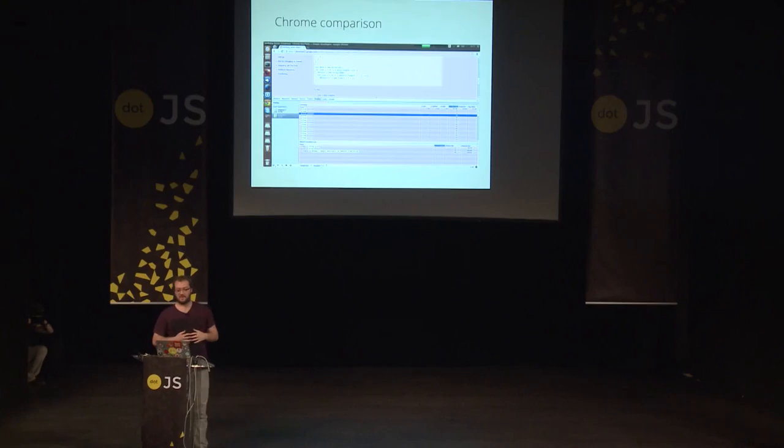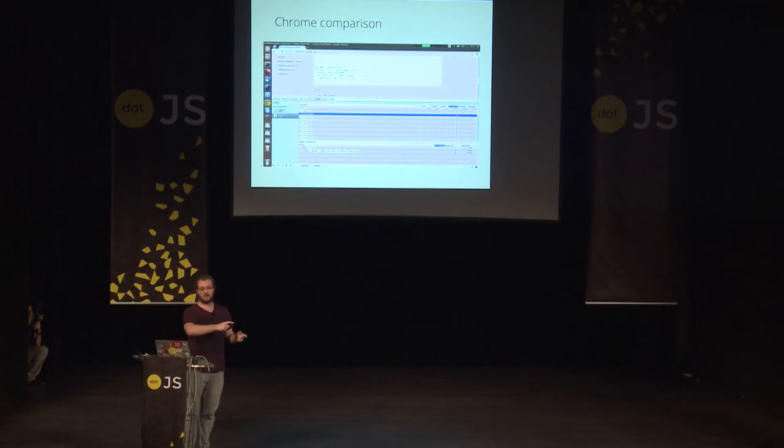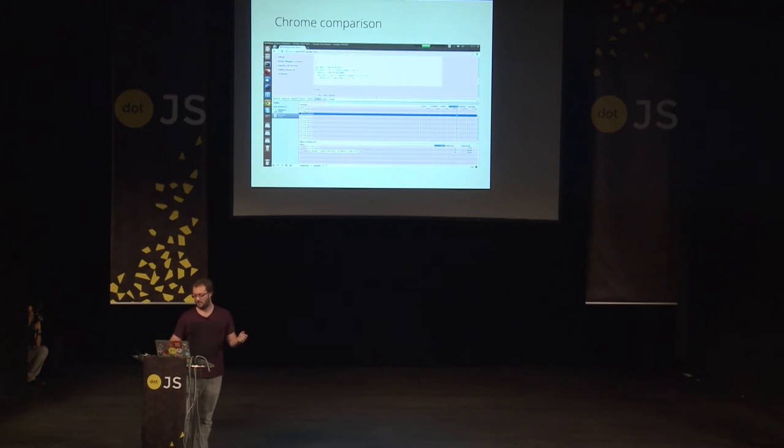You can also take two snapshots in Chrome and make a comparison. It shows you the number of objects by constructor that appeared, disappeared, and the delta between both. I think the temporary objects that were allocated and removed between the two snapshots — we don't really need to know about them.